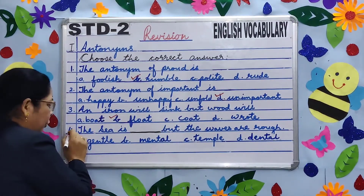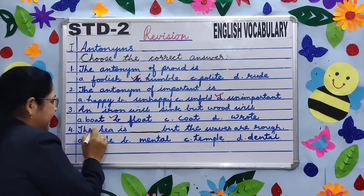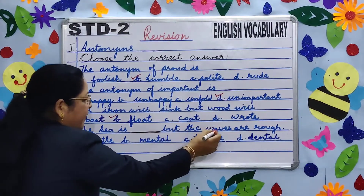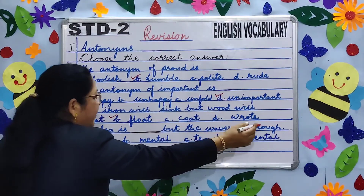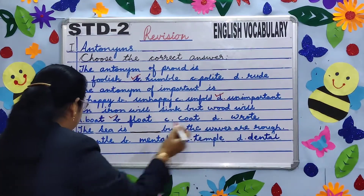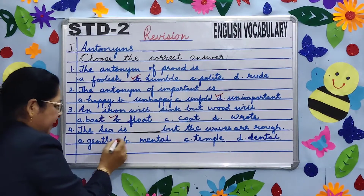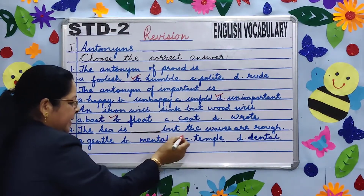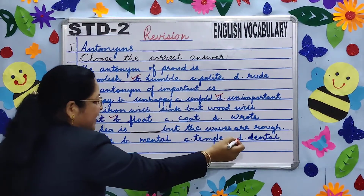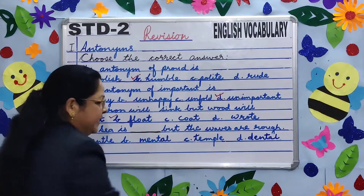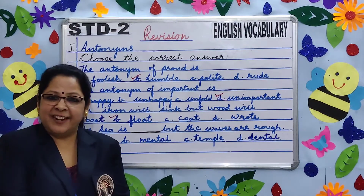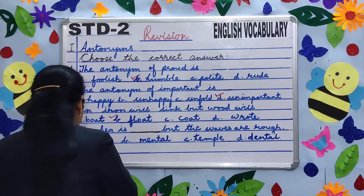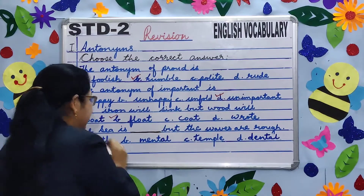Number four. The sea is dash, but the waves are rough. A. Gentle, B. Mental, C. Temple, D. Dental. Which is the right answer? Very good — A. Gentle.